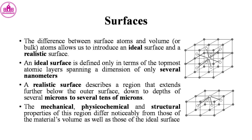The difference between surface atoms and volume atoms allows us to introduce an ideal surface and a realistic surface. An ideal surface is defined only in terms of the topmost atomic layers, spanning a dimension of only several nanometers.